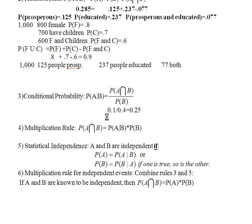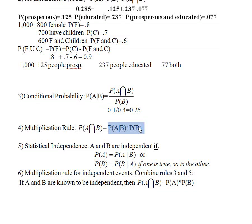Rule number four is the multiplication rule. The multiplication rule is really just taking the conditional probability rule and rewriting it — it does come in handy sometimes. The conditional probability rule says the probability of A given B equals the probability of A and B divided by the probability of B. To get the multiplication rule, multiply both sides by the probability of B, and you get: the probability of A given B times the probability of B equals the probability of A and B. This is easier to use if you know the probability of A given B and the probability of B, and you want to find that intersection.